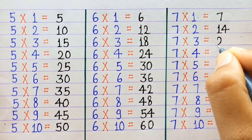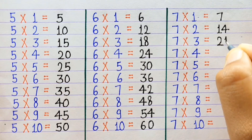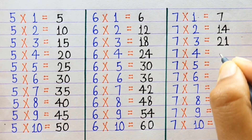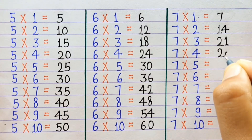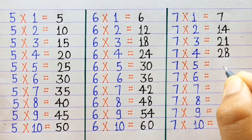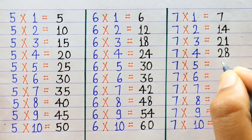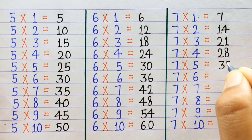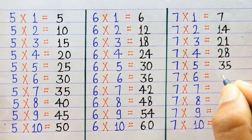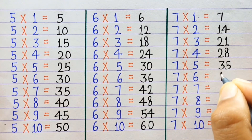7×1=7, 7×2=14, 7×3=21, 7×4=28, 7×5=35, 7×6=42, 7×7=49.